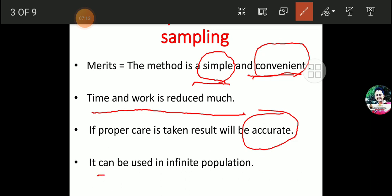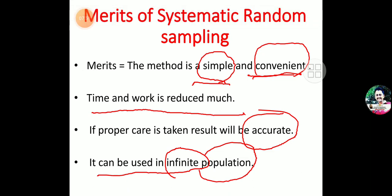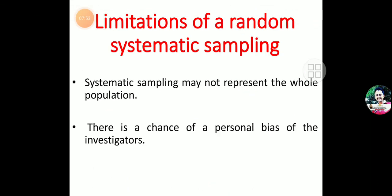Another most important merit is that it can be used for an infinite population — when the population is a huge one, we can still use this systematic sampling method. So in summary, systematic random sampling is simple and convenient, it reduces time and work, the results obtained will be accurate, and it can be applied to a huge or infinite population.